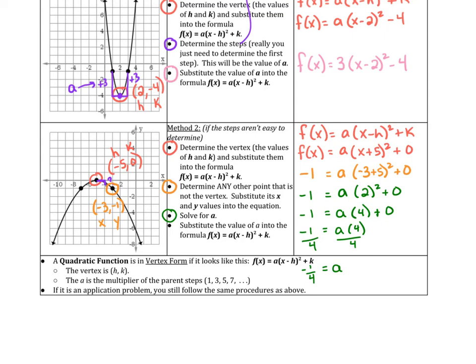So when you go to write your equation, you're going to substitute those values of a back into the equation. So the a is negative 1 quarter. The h was negative 5. So x minus negative 5 is x plus 5. And the k value is 0, which you don't need to write.